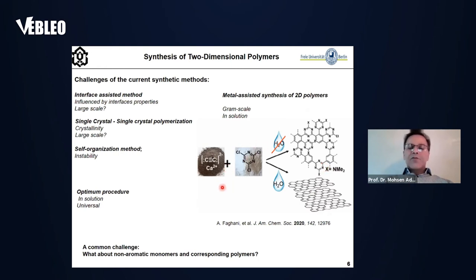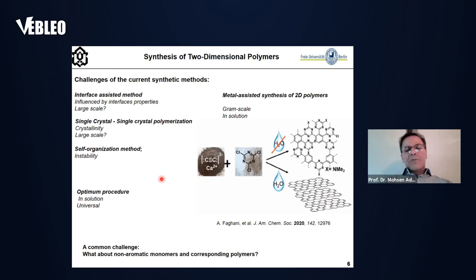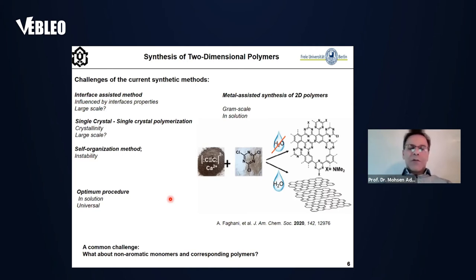The driving force for this polymerization in two dimensions was the interaction between metal and monomer as ligands. But in addition to individual problems with all these methods, the common challenge is that all of them are based on aromatic monomers and cannot be performed for non-aromatic monomers. Two-dimensional polymers with aromatic backbones are normally not suitable for biomedical applications because of their intrinsic toxicity. Therefore, we need a way to produce two-dimensional polymers with non-aromatic backbones.